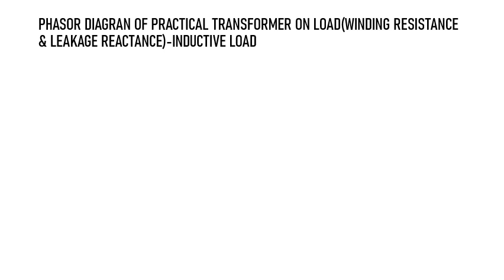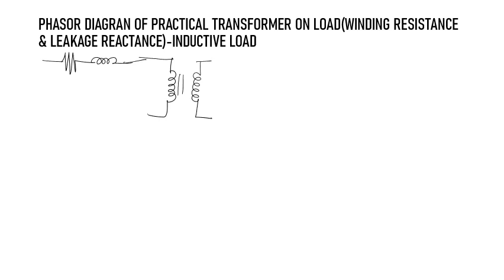Here we are going to see the phasor diagram of a practical transformer on load, and the load is inductive load. Before drawing the phasor diagram, first we have to draw the equivalent circuit of the transformer considering both primary and secondary parameters. We have to draw the primary winding resistance R1 and primary winding reactance X1.